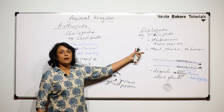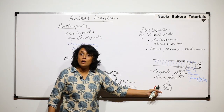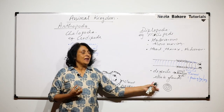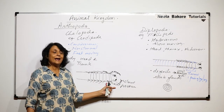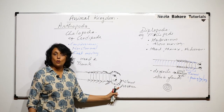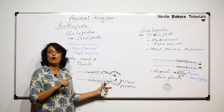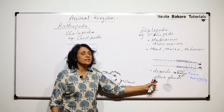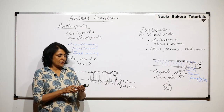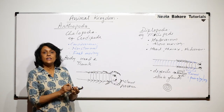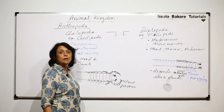Only once the attacking animal is gone will the millipede open its body. So for defense it either uses the stinking substance or makes a tight coil. In the case of centipede, it has an attacking mode with poisonous claws — these poisonous claws are nothing but the modified first pair of legs.